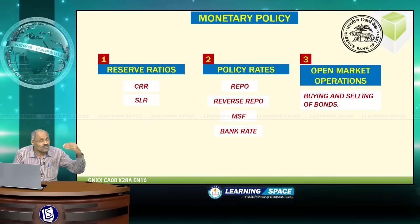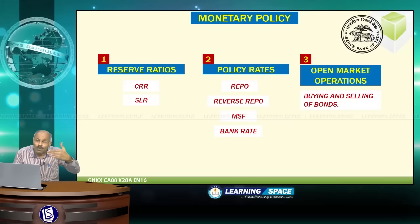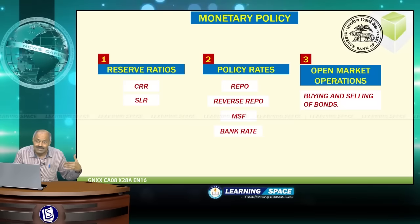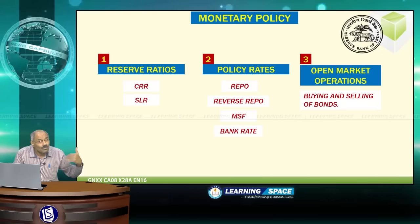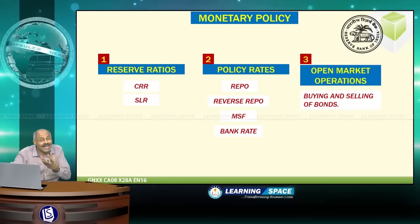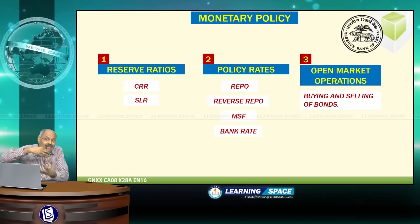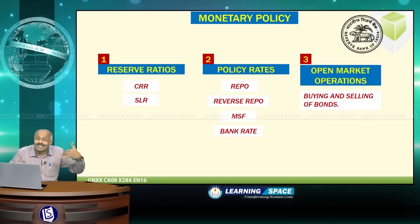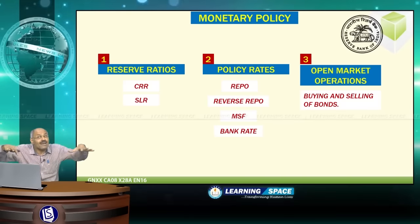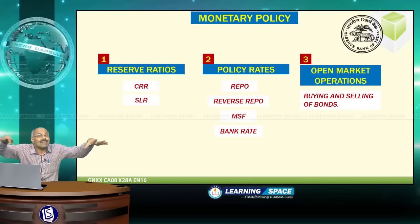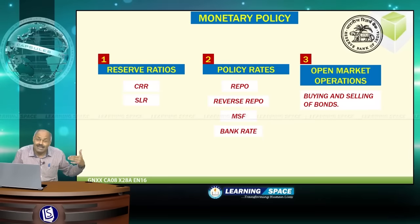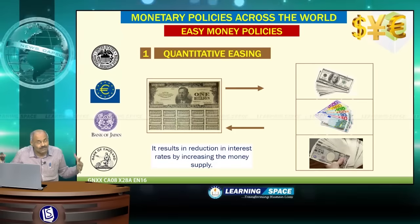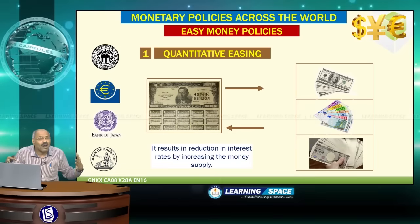Currently, our cash reserve ratio is 4%, the repo rate is 6.5%, and the reverse repo rate is 6%. The reverse repo rate of 6% means if commercial banks park money with the central bank, the central bank pays 6% interest. The repo rate of 6.5% is the benchmark interest rate on which the overall interest rate structure in the banking system depends.